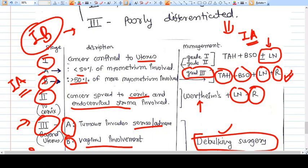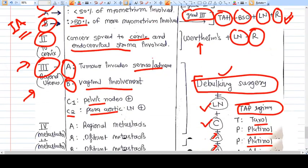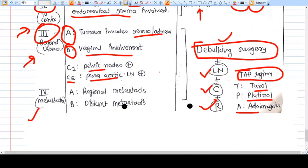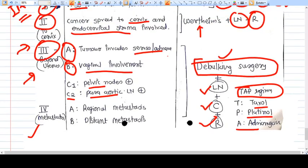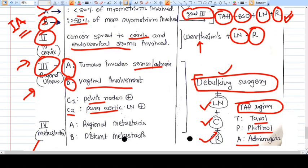Chemotherapy is given in stage 3 and stage 4 only. It's not given in stage 2 even. So this is all about endometrial carcinoma. Thank you.